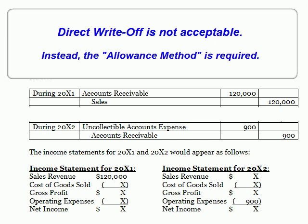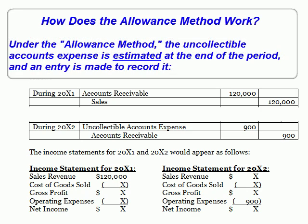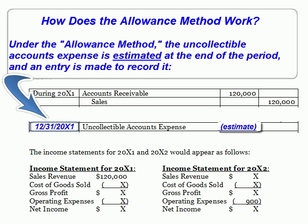In keeping with the matching principle, the uncollectible account expense should be reported on the 20X1 income statement along with the sales revenue. Use of the direct write-off method does not allow us to do this, but another method — the allowance method — does. This is why direct write-off is not allowed under generally accepted accounting principles, but the allowance method is. Here's how the allowance method works: at the end of 20X1, before any of the accounts go bad, we estimate the amount of uncollectible accounts and we make an end-of-period entry to record the expense.